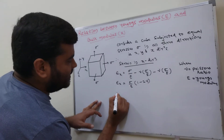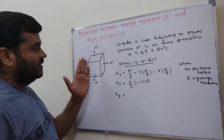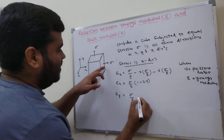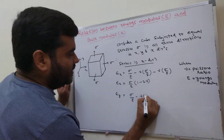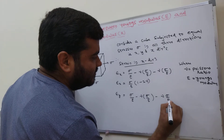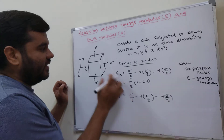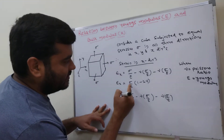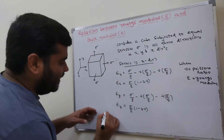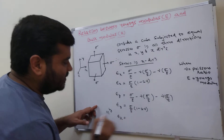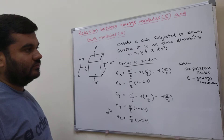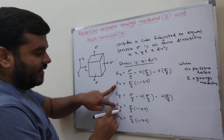Similarly, strain in y direction equals sigma/E minus nu times sigma/E (x direction) minus nu times sigma/E (z direction), which also simplifies to sigma/E into (1 minus 2nu). Strain in z direction is the same: sigma/E into (1 minus 2nu). Because the stresses are equal in all directions, there is no change between the three strain expressions.